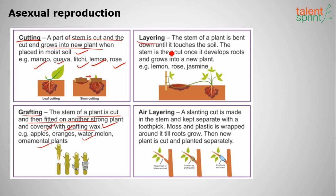The next method is layering. The stem of the plant is bent down — as you can see in the figure — and after it grows roots and develops into a new plant, the stem is cut. This is done for jasmine, rose, and lemon plants.